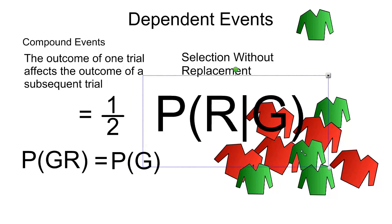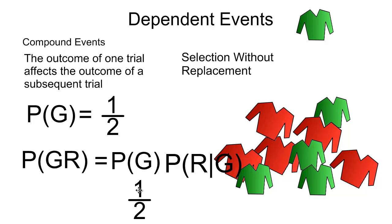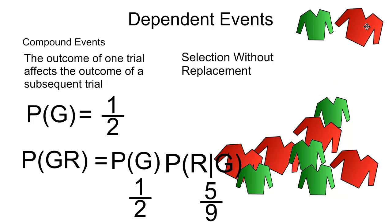And so I have to be a little more careful here. The probability of a green cardigan, that was one-half, just like it was with independent events. However, the probability of selecting a red cardigan, given that I've already selected a green cardigan, is actually five-ninths. Because there are five red cardigans still, but altogether there are only nine cardigans to select from. And so the probability has changed based on the probability of the first event.